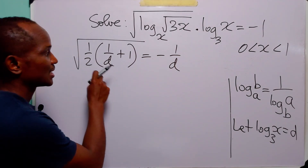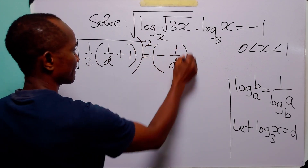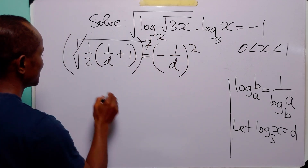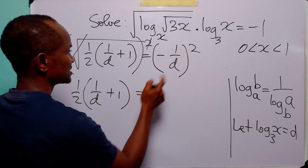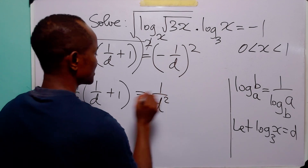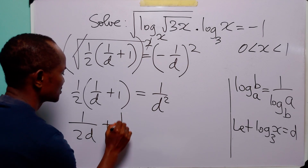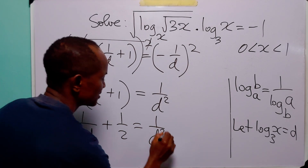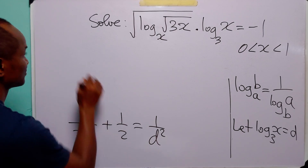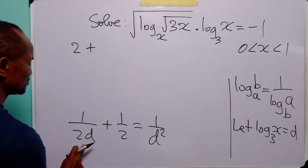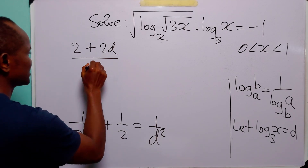Now to get rid of this square root, let us square both sides of this equation. This gives us half times 1 over d plus 1, equals 1 over d squared. Opening the bracket we have 1 over 2d plus 1 over 2 equals 1 over d squared. Combining these two fractions, we get 2 plus 2d all over 4d, equals 1 over d squared.